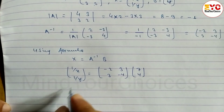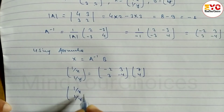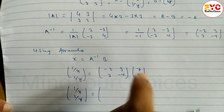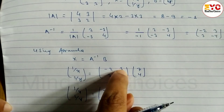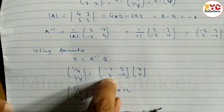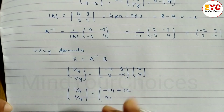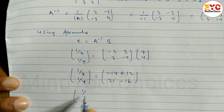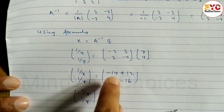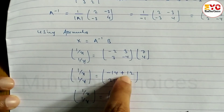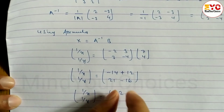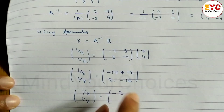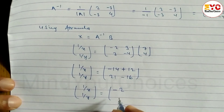Now we multiply these two matrices. For the first row: (−2 × 7) + (3 × 4) = −14 + 12 = −2. For the second row: (3 × 7) + (−4 × 4) = 21 − 16 = 5. So [[1/x], [1/y]] = [[−2], [5]].